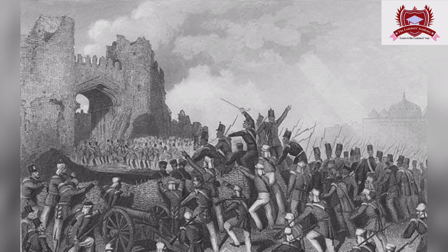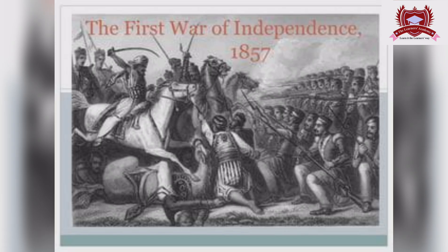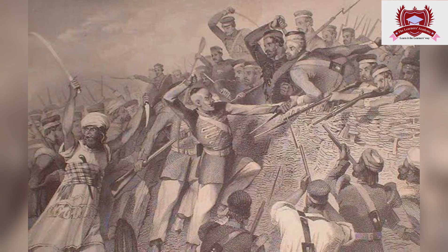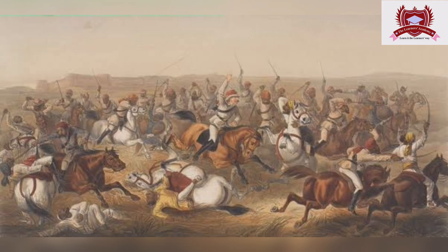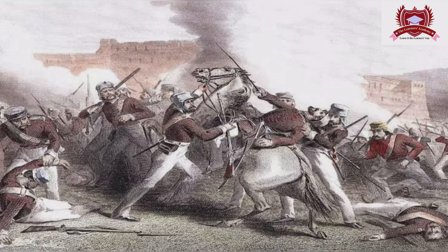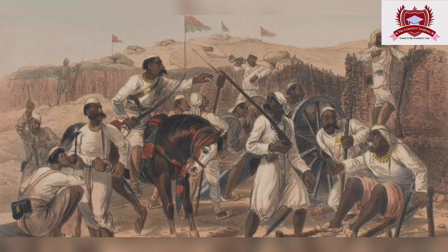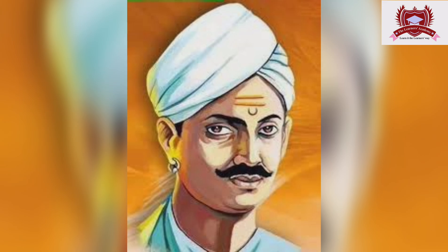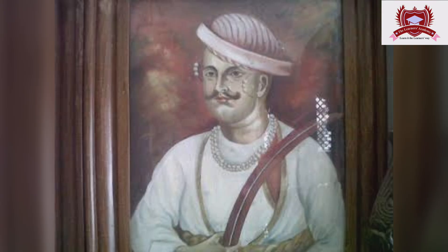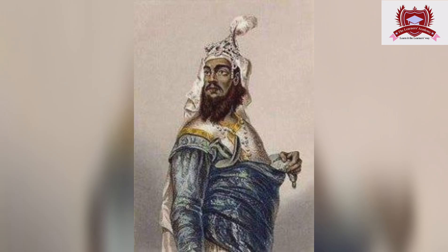But Indians didn't stay silent. The struggle for independence began with the Revolt of 1857, also known as the First War of Independence. Though it was ultimately suppressed, this uprising ignited a spark for larger movements and brought to light the need for a unified struggle against colonial rule. The key figures in this struggle were Rani Lakshmibai of Jhansi, Mangal Pandey, Nana Sahib, Tatya Tope, Man Singh and Kunwar Singh.